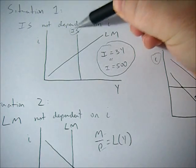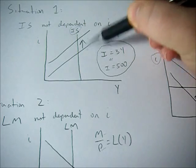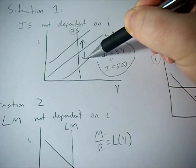Same thing here with this vertical IS curve, if we institute monetary policy, all it does is change the interest rate and has no effect on GDP.